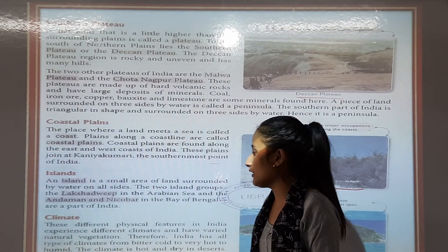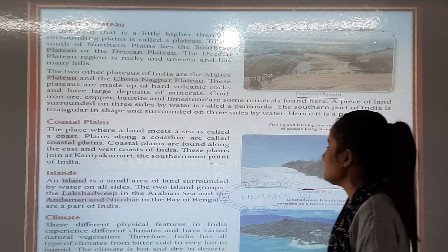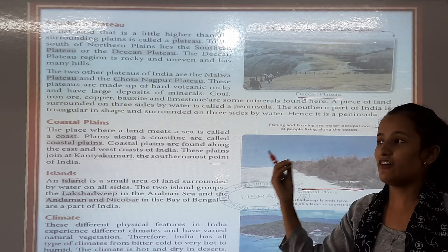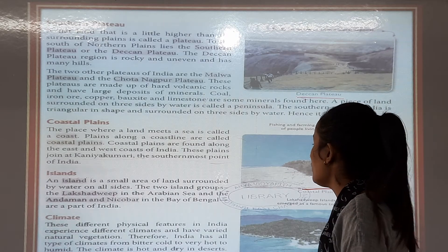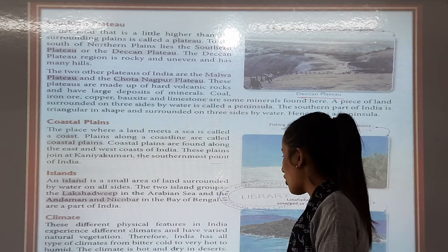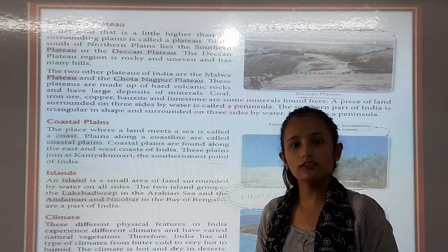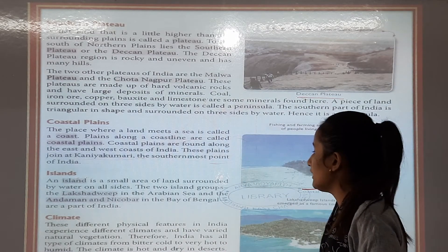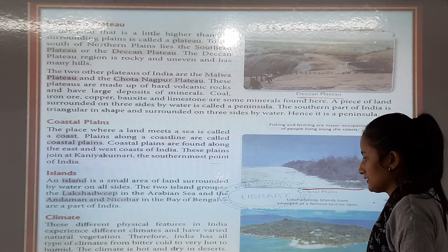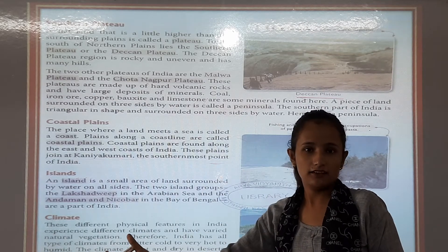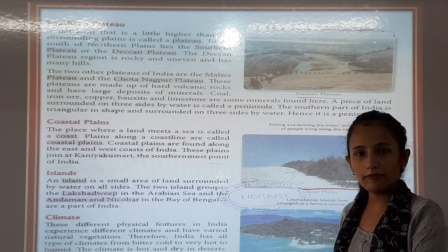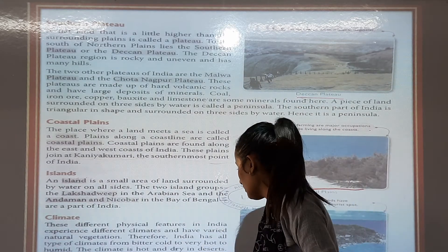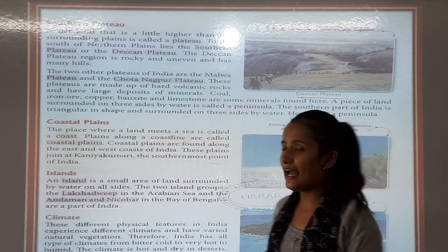We are going to learn about climate. These different physical features of India experience different climates with a variety of natural vegetation. India has all types of climates, from bitter cold to very hot. The climate is hot and dry in the desert. It is bitterly cold on the mountains. It is hot in summer and cold in winter in the plains.